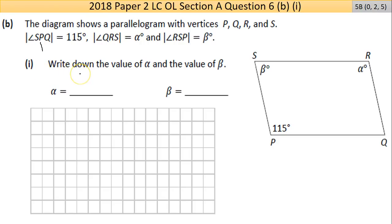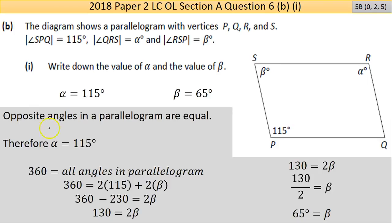The angle RSP is called beta. You're asked to write down the value of alpha and beta. The basic point here is that opposite angles in a parallelogram are equal in size. Therefore if the angle SPQ is 115, the angle opposite it is equal so it's 115 as well.